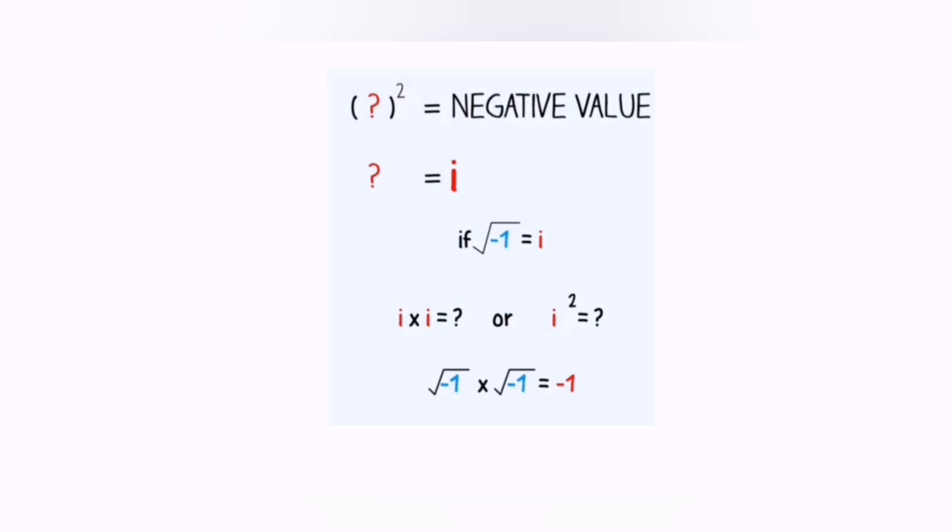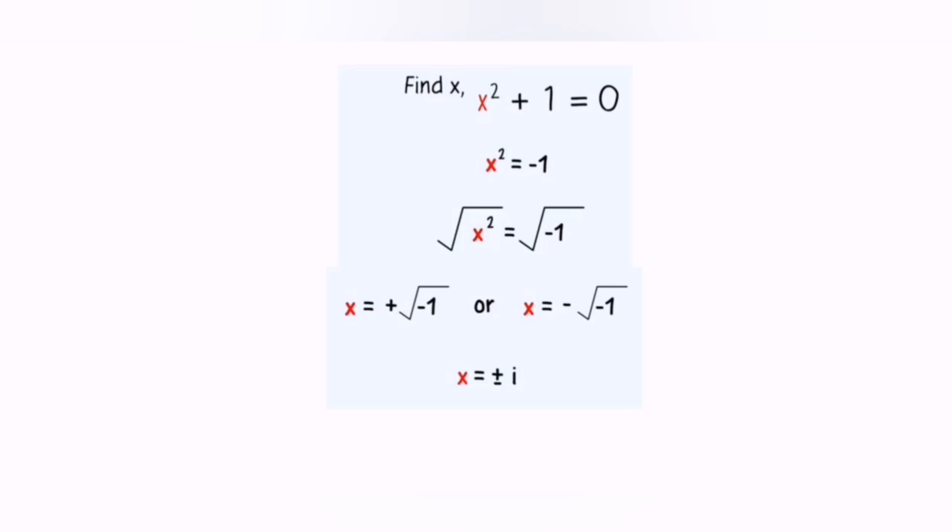And the next question was, can you find the solution for x squared plus 1 equals 0? The answer is yes. Transferring the 1 to the right-hand side, we get x squared equals negative 1. Taking the square root on both sides, we get the value x equals square root of negative 1, or x equals negative square root of negative 1. That is i and negative i.